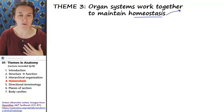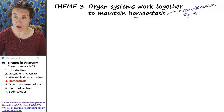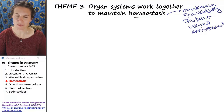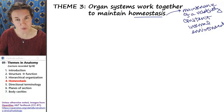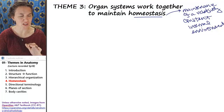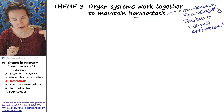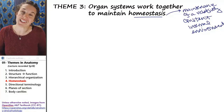Homeostasis is the maintenance of a relatively constant internal environment. Body systems work together to maintain a relatively constant internal environment. They do this because cells can't function if the pH goes off, if the salt concentration goes wonky, if glucose concentrations in your blood go out of control. There are many characteristics that have to be maintained in a certain range or your cells can't live in that environment.